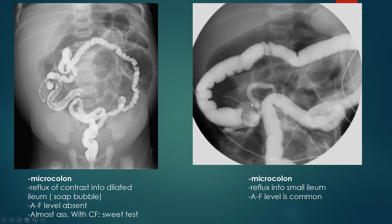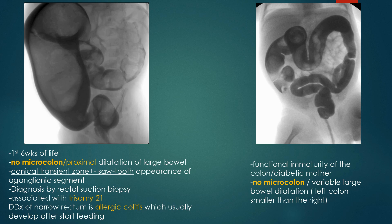In ileal atresia, the reflux will go into a small caliber ileum with a blind end. The key feature is the distal ileum: if it is dilated, it is most probably meconium ileus; if it is small caliber with a blind end, it is most probably ileal atresia. Air-fluid levels are more common in ileal atresia, but this feature is not helpful as we do not perform erect radiographs in the neonatal unit.